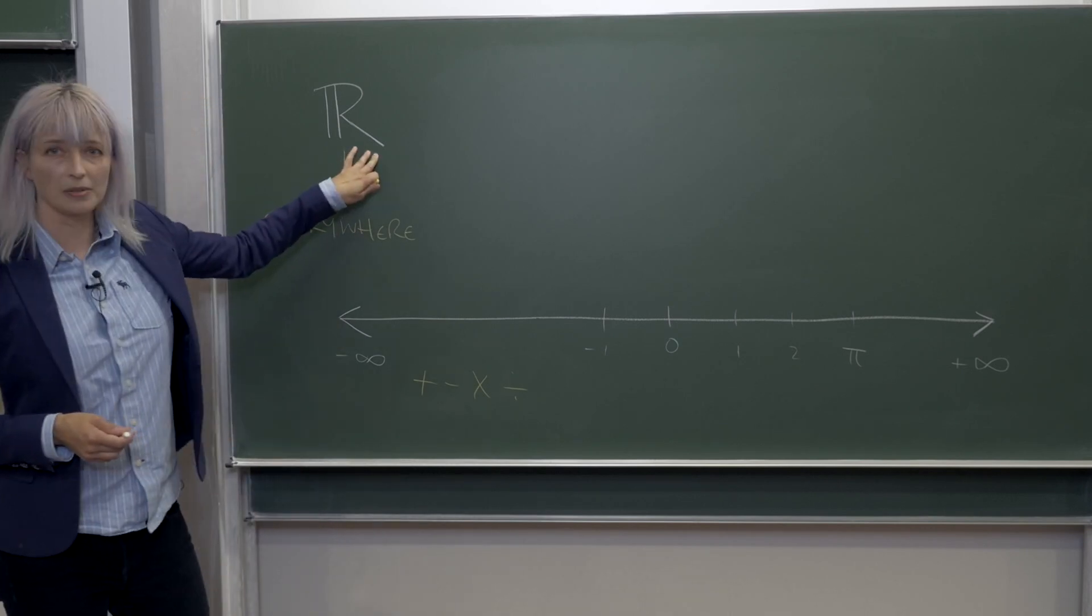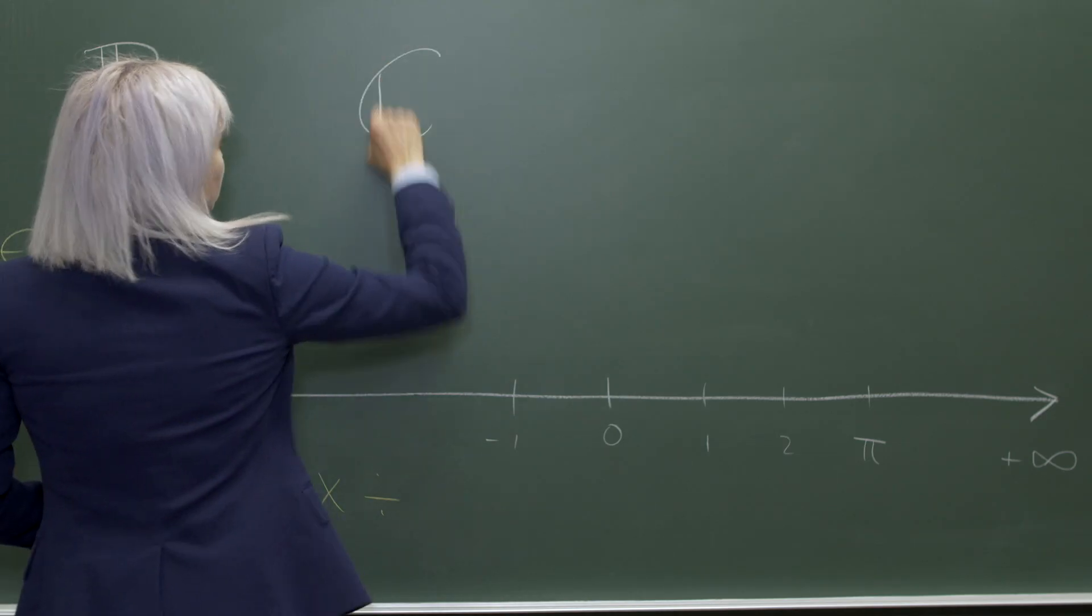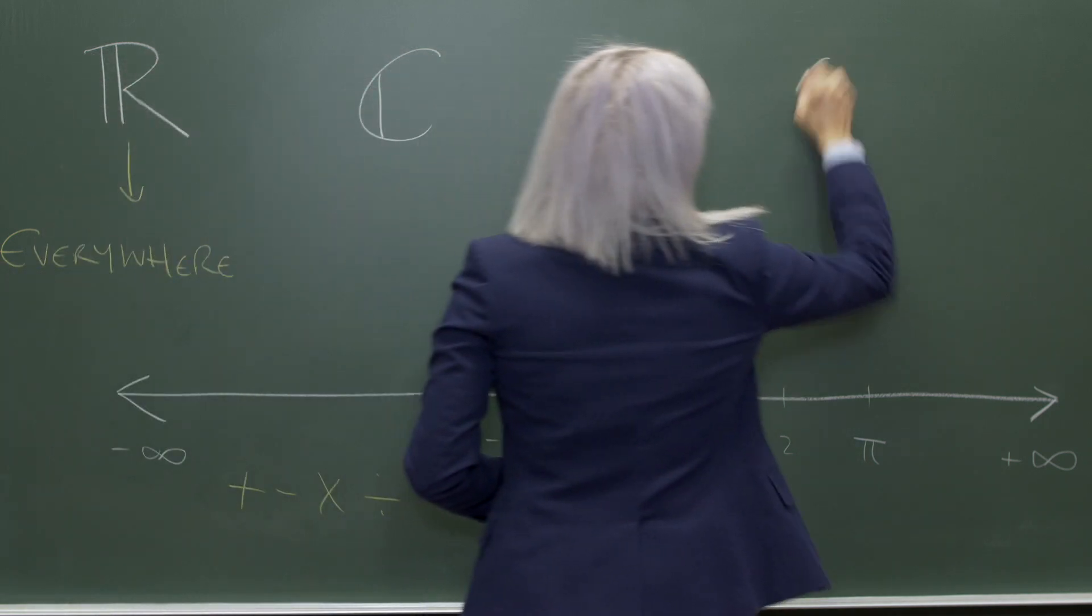They're called the real numbers, the complex numbers, the quaternions, and the octonions.